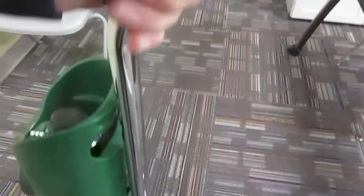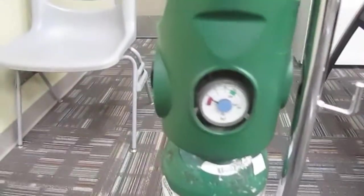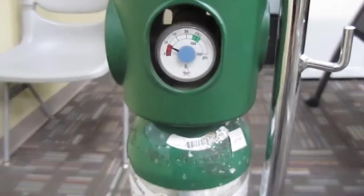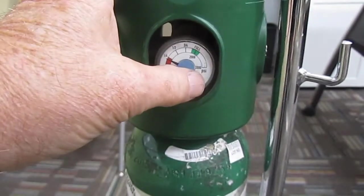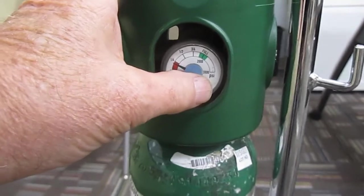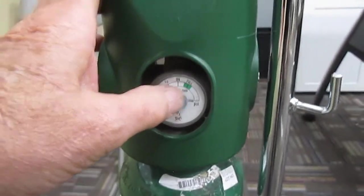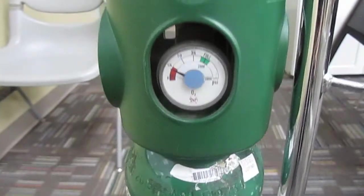This one has a gauge on the side which shows you the amount that's in it, and there's a measurement here in pounds per square inch, PSI. Two thousand is the full range.